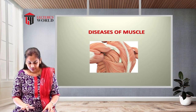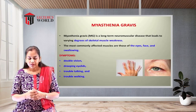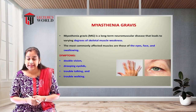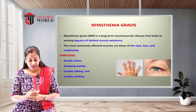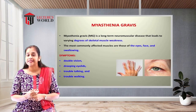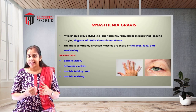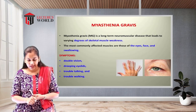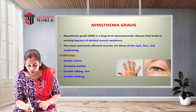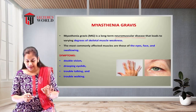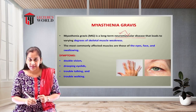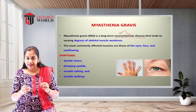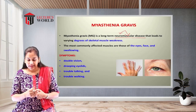The first condition or abnormality of the muscles is known as myasthenia gravis, represented as MG in the clinic. So when you see MG written by a doctor, you have to understand this is myasthenia gravis. It is a long-term neuromuscular disease, where both the neuro and the muscular systems are affected.